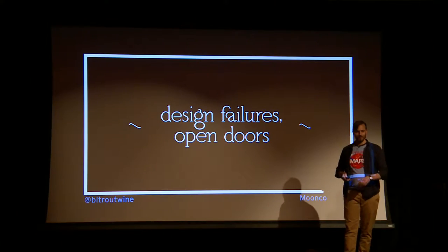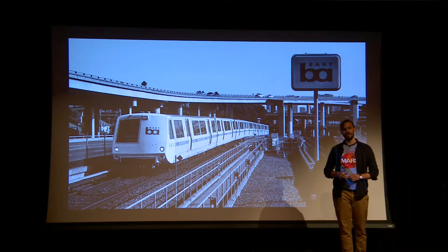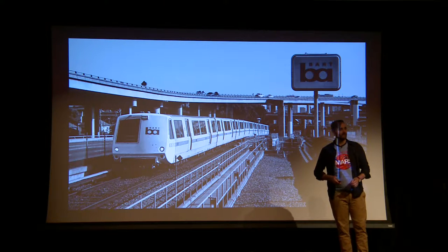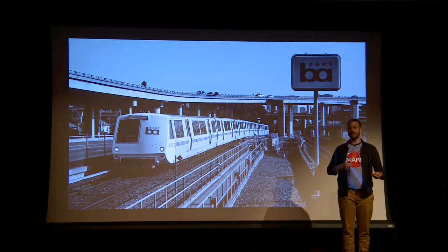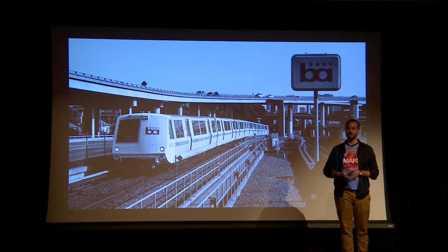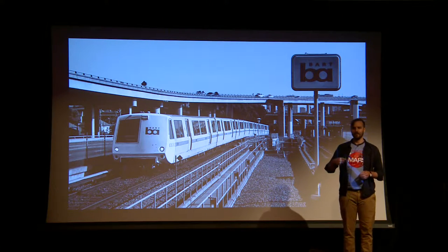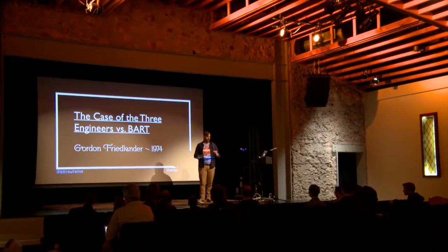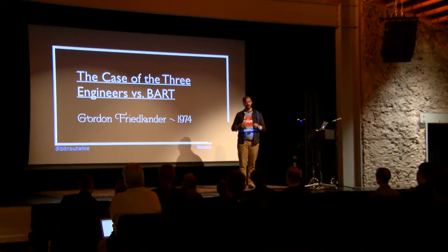The first example of software failures is design failures — the doors of the BART system. A computer controls the doors and had a specification problem: if the train goes too fast past a certain point in the station, it will open its doors while in the Transbay Tube, an underwater subway where the train is going about 50 miles an hour. Three engineers analyzed the BART system, recognized this would happen, and were fired for causing trouble. There's an IEEE paper about the ethics around engineering and how organizations influence what a technical system can accomplish.